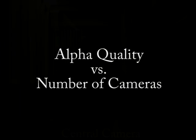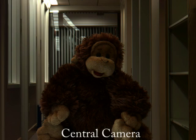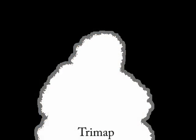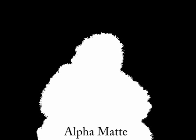The number of cameras needed to get good results is a factor of scene content and camera spacing. We've gotten good results with as few as eight cameras. Here we show results for a stuffed gorilla filmed in a hallway. As we drop the number of cameras used, the alpha-mat quality is retained.